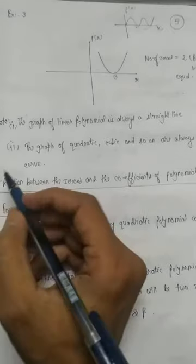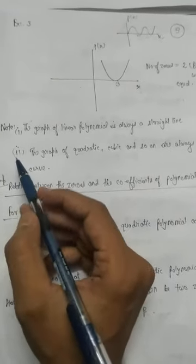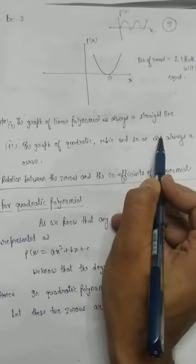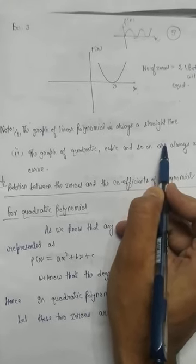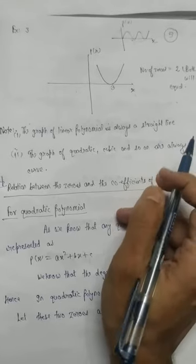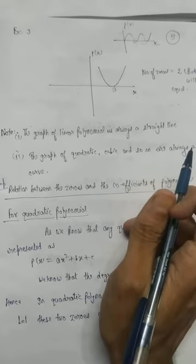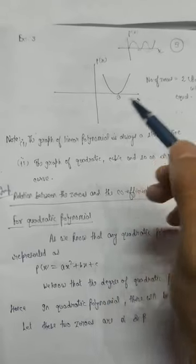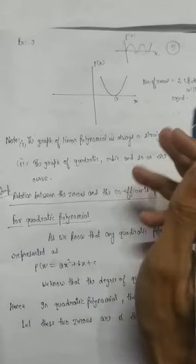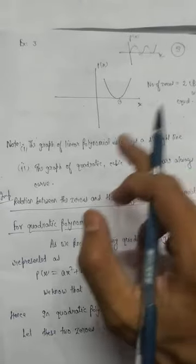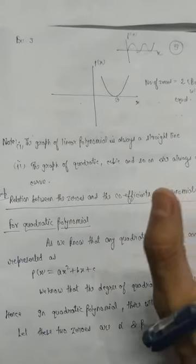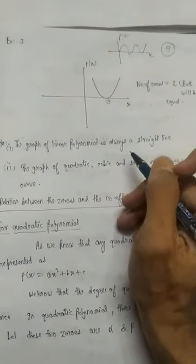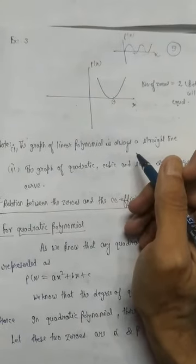Note some important points. The graph of a linear polynomial is always a straight line. A line can be extended in any direction and has infinite length. So whenever you see a linear polynomial, you must identify that its graph will always be a straight line — as you have already understood in class 9th.